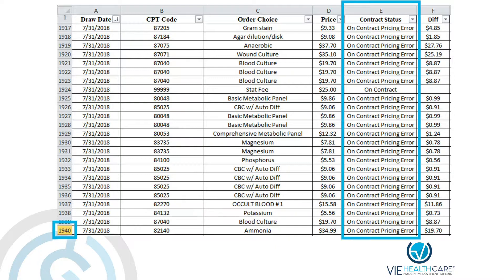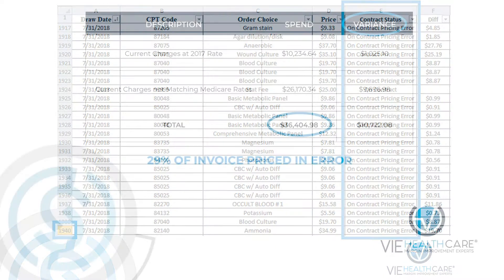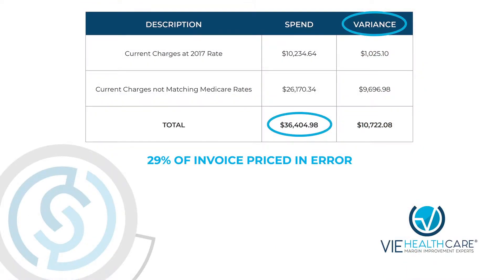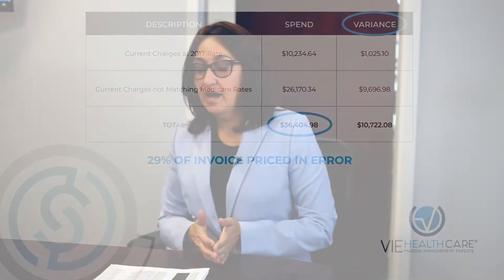What's interesting about this specific monthly invoice is that the total was $36,404, and 29% of that invoice was priced in error — items on contract but billed at the wrong contract price. Prior to Invoice ROI, this hospital was paying their Reference Lab invoices without having time to manually review every line item against contract pricing.